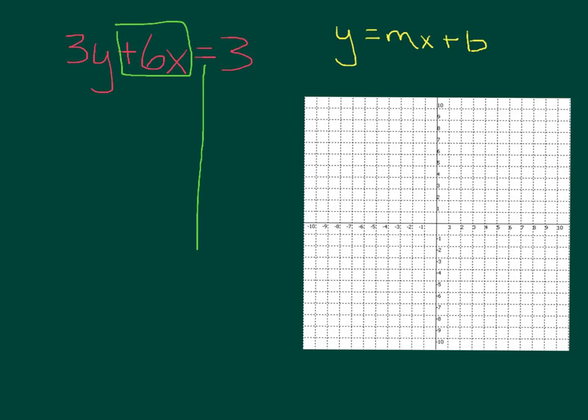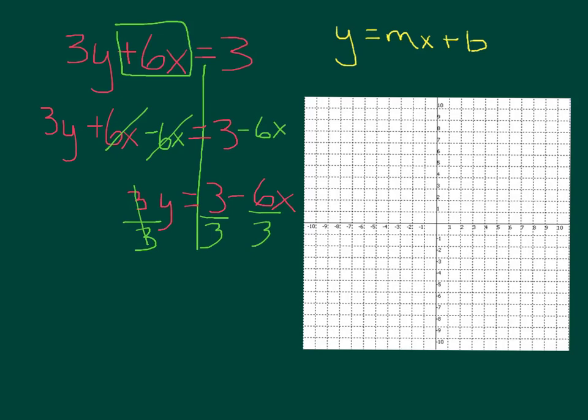So we need to subtract 6x on both sides. 3y + 6x = 3, and we subtract 6x from both sides. Cancel out here. Bring down everything that you have left. So we have 3y = 3 - 6x. Now we have to divide by 3 here, which means we have to divide everything by 3.